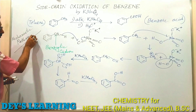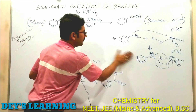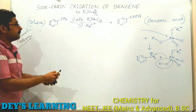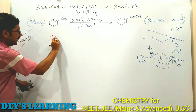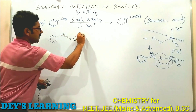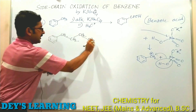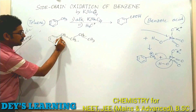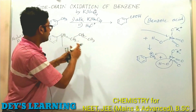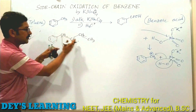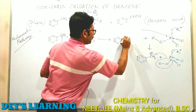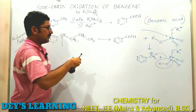Let us take some examples. If we have a molecule with a large side chain — for example, a butyl group attached to a benzene ring — this is still a benzylic position. KMnO₄ will break the benzylic C–H bond, and in the same manner all positions will be oxidized. The entire side chain is ultimately converted to benzoic acid, just as in the toluene case.